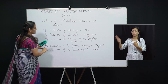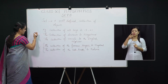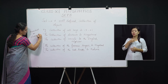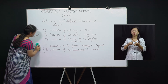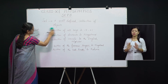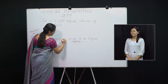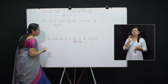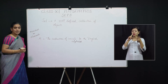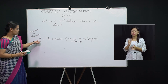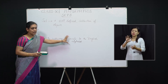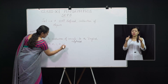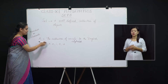Every object in the collection we can call them as members or elements. For example, take the collection of vowels in the English alphabet. We can denote this set by capital letters A to Z — we can use any capital letter. So the capital letter denotes the whole set. The members of this set are A, E, I, O, U — these are called members of set A.